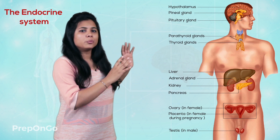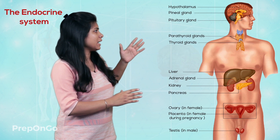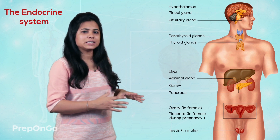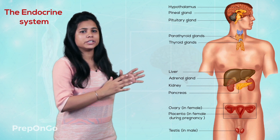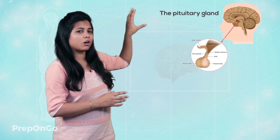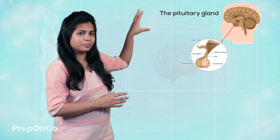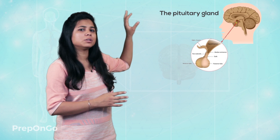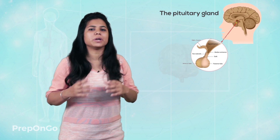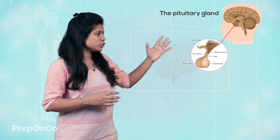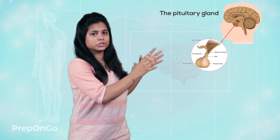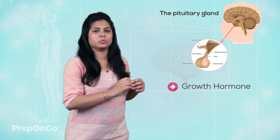There are many glands present in the endocrine system. Let's see these glands one by one in detail. First, we talk of the brain. The brain has the main pituitary gland, which is responsible for the secretion of many hormones. When we talk of the pituitary gland, it secretes many hormones, but mainly the growth hormone.